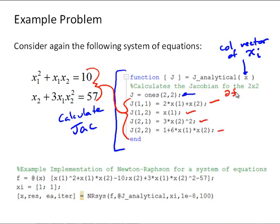So, recall this was df1 dx1, df1 dx2, and df2 dx1, and lastly, df2 dx2. So, there's our function m file to calculate the Jacobian.